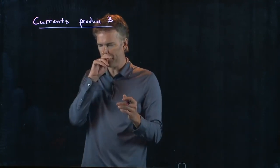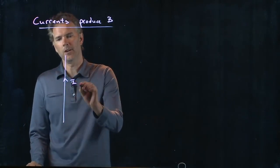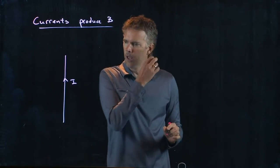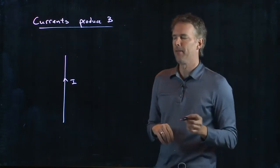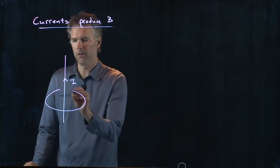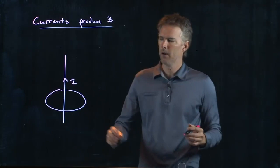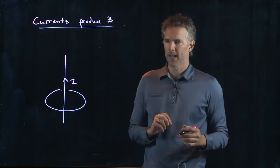So if I think about a wire carrying current I, there is a B-field around that wire. The B-field around the wire looks like this. The dashed line indicates going behind the wire, the solid indicates coming out in front of it.